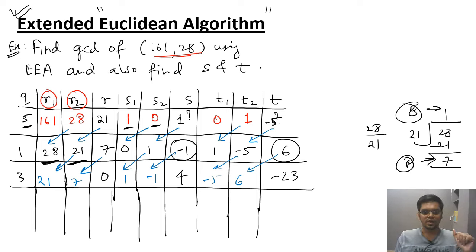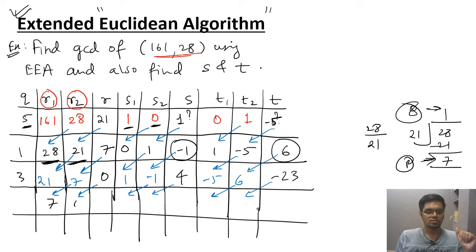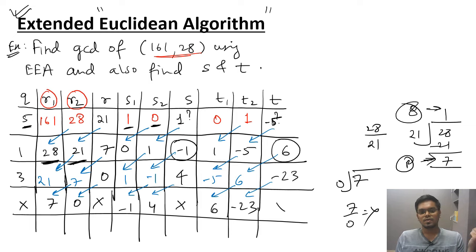Again, you have to do the shifting, the final shifting because now we will arrive at a problem. So this is the final shifting: 7, 0, minus 1, 4, 6, minus 23. What is the problem? Now you cannot divide it further. 7 divided by 0. You cannot do it. 7 by 0, it's not possible. So if it's not possible, we do not have any quotient. We do not have any remainder. And hence we cannot find the value of S. We cannot find the value of T. So this is the last row and you have got your answer.